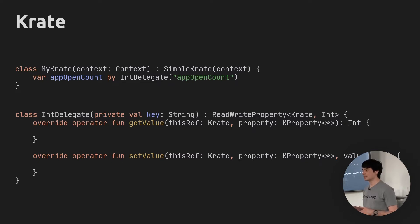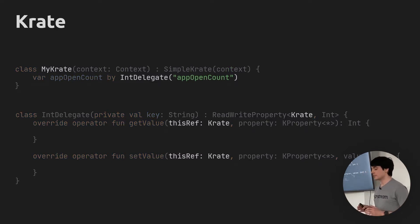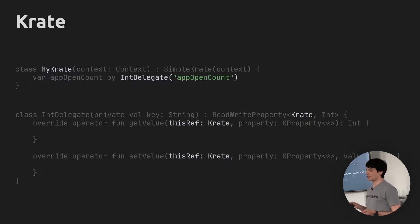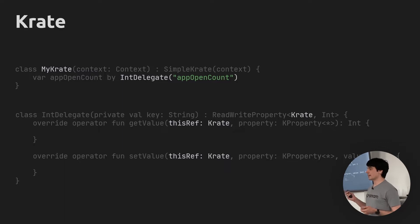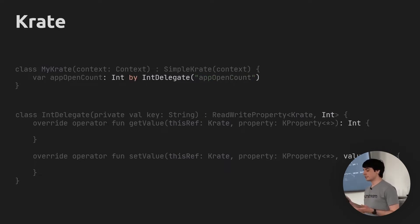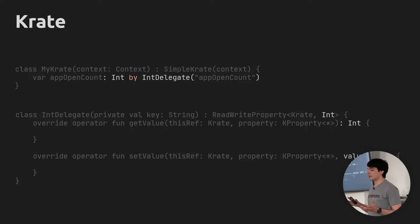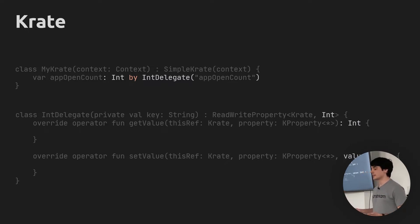The ReadWriteProperty interface also has two generic type parameters. One of them you can use to control where this property may be used — by specifying Crate here, I'm making sure that these properties will only ever be used inside of a Crate. I'm also going to get the current crate instance as the first parameter whenever someone gets or sets the value. The other type parameter is simply the type of property we're implementing — in this case, int.